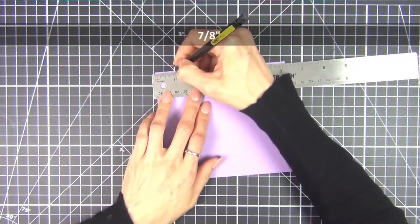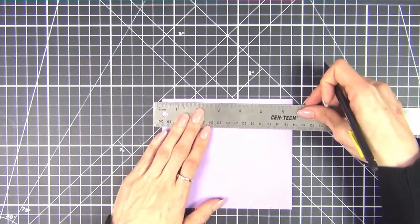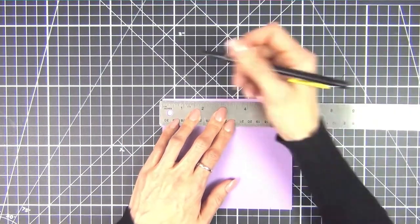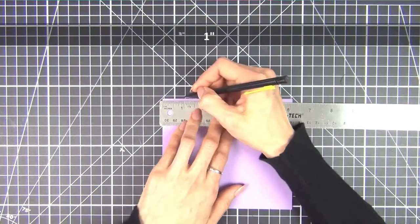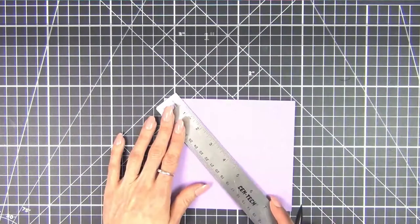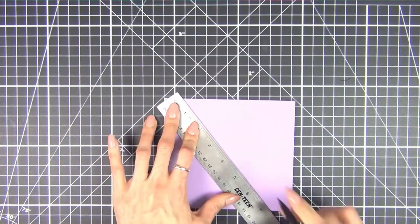Then I flip it and do the same thing except make a mark at 1 inch. Once I have my marks, I use my ruler to draw a diagonal line between the two.